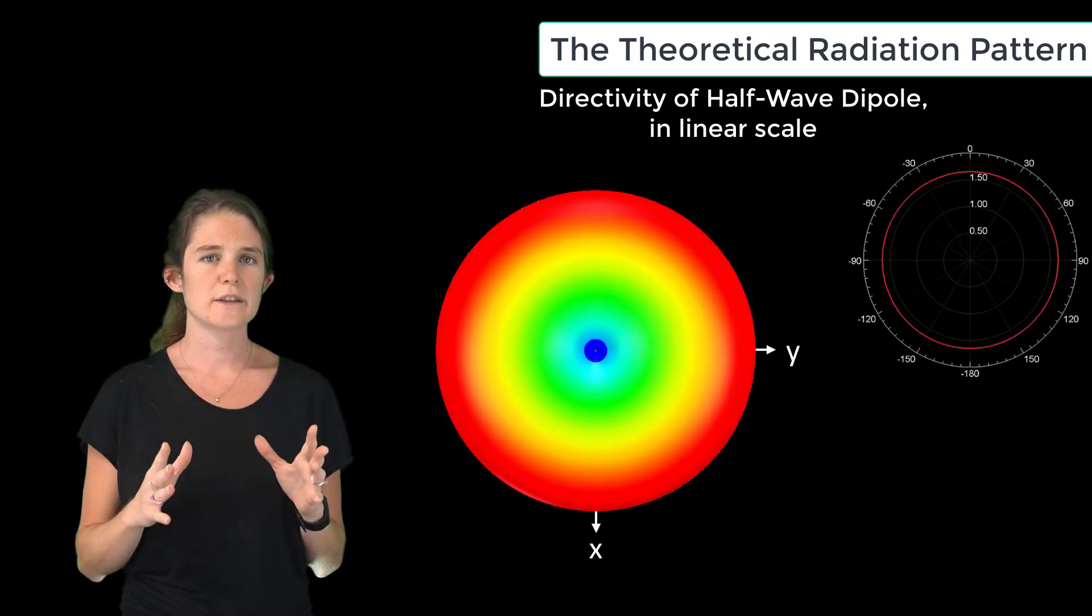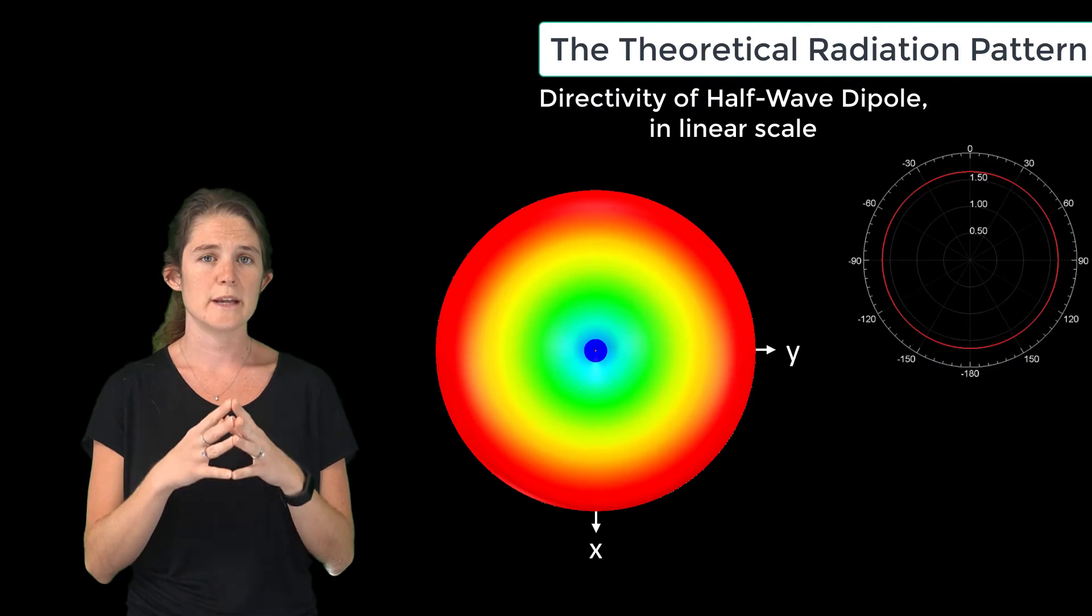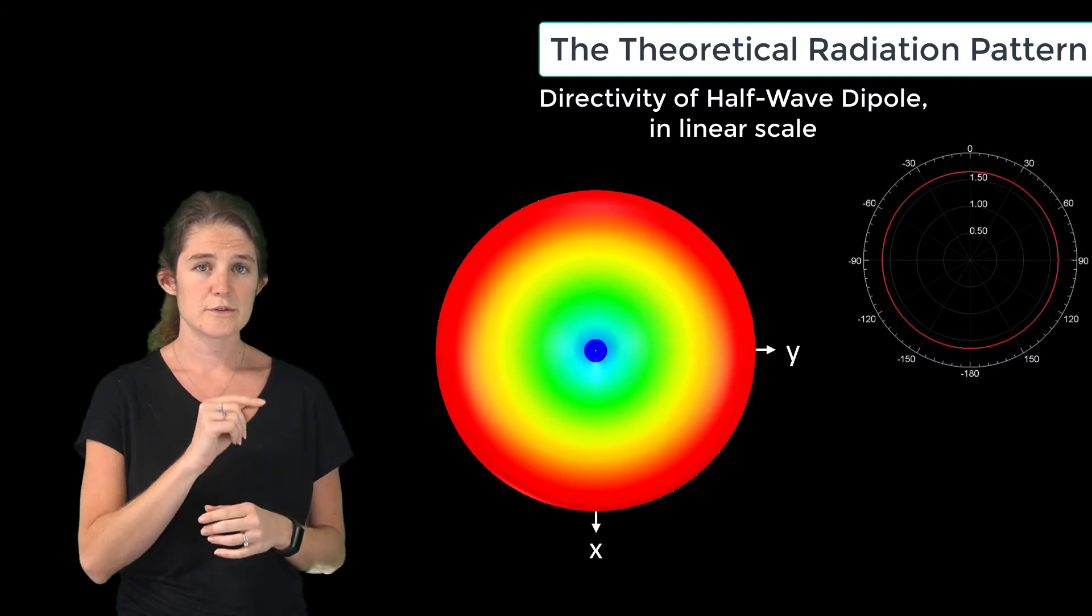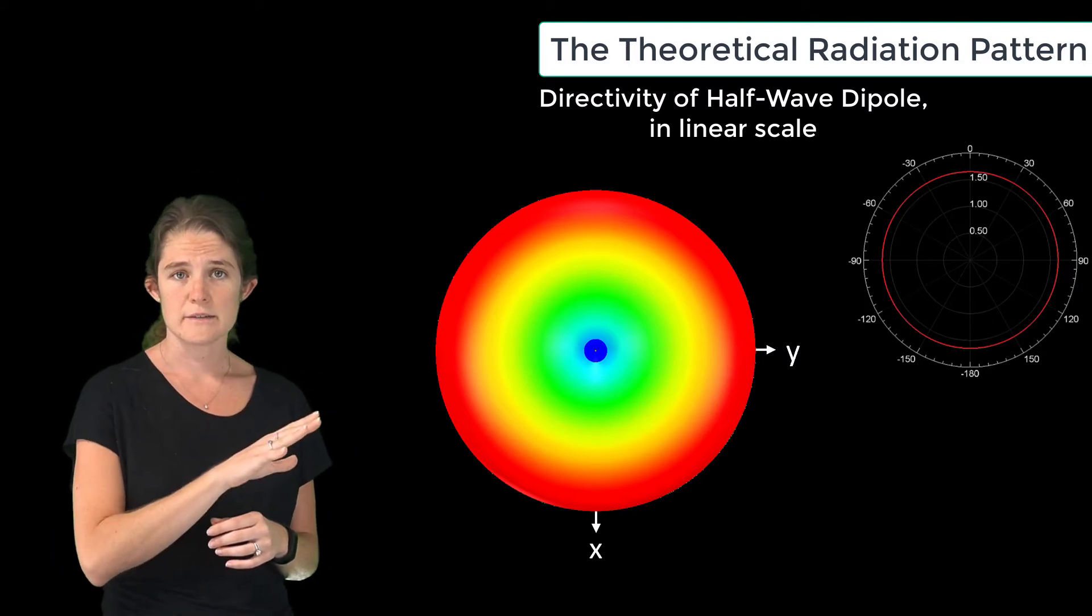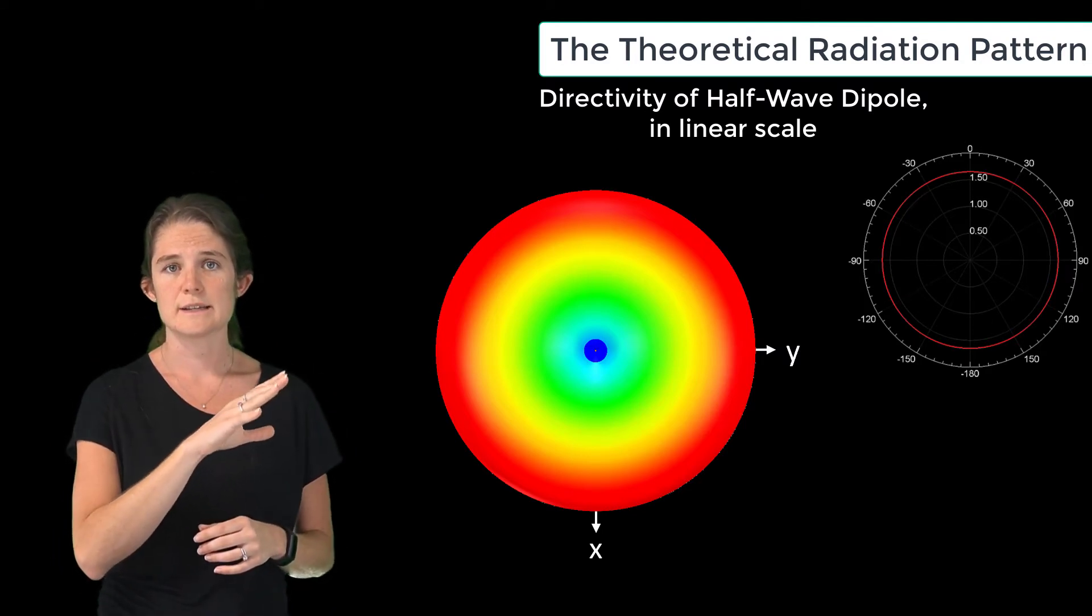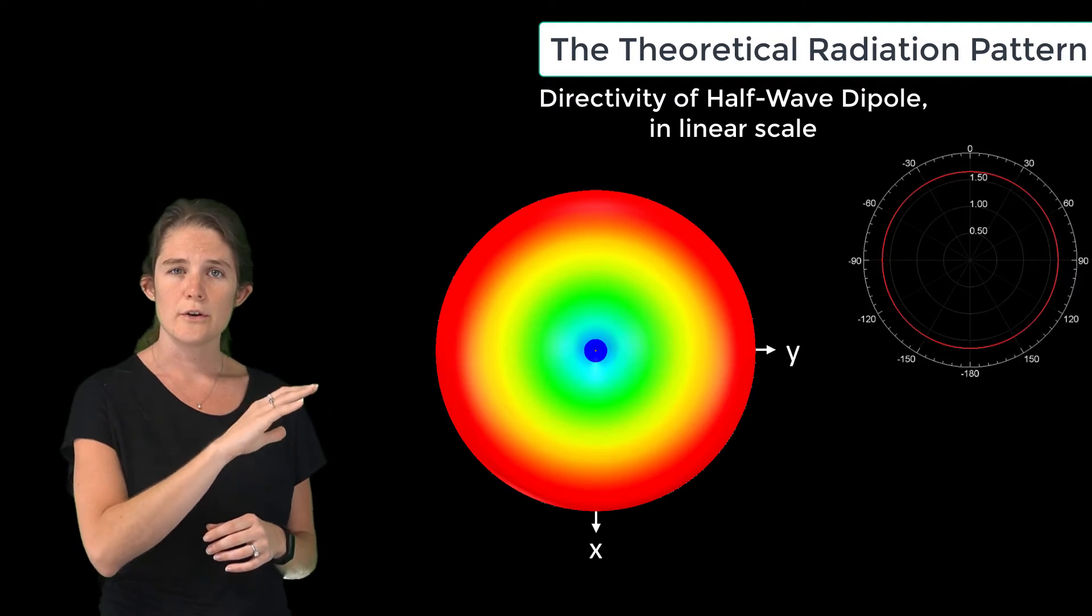We can also look at the radiation pattern in terms of a 3D plot. So this is the radiation pattern viewed from the positive z-axis. Regions of high directivity are shaded red, and as directivity decreases the color changes to orange to yellow to green to blue.